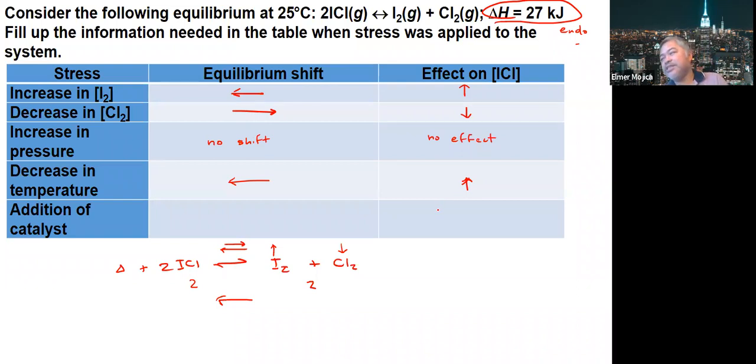Addition of catalysts. Catalysts don't really have an effect except they make the reaction reach equilibrium faster. So the shift is not affected, and there's no effect on the ICl concentration.